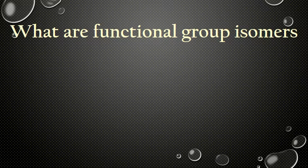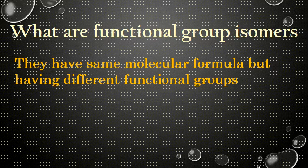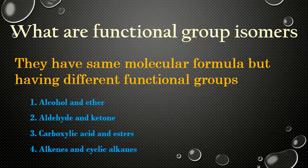Now let's move on to functional group isomers. These isomers have the same molecular formula but different functional groups. There are four categories showing functional group isomers: first, alcohol and ether; second, aldehyde and ketone; third, carboxylic acid and ester; and fourth, alkenes and cyclic alkanes.